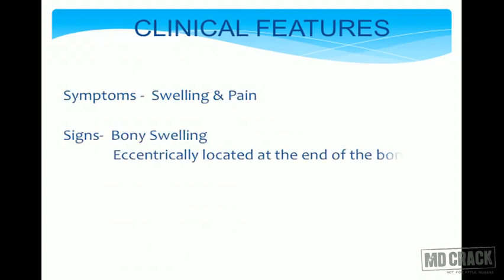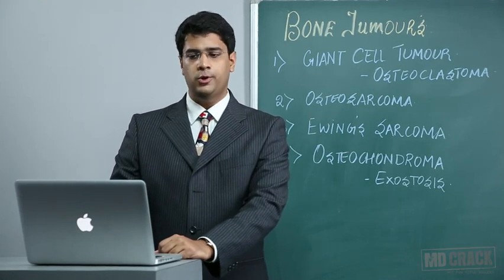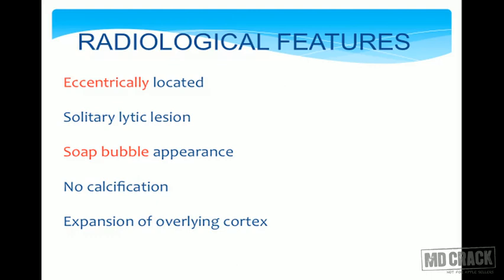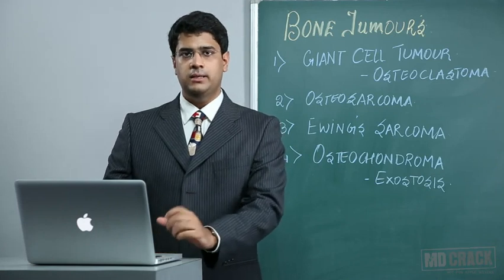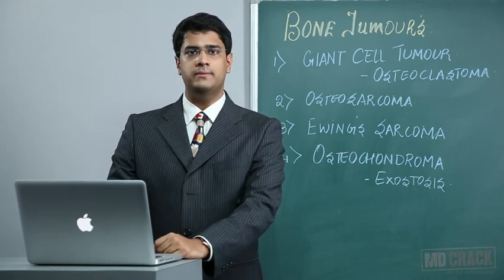Clinical features of osteoclastoma include symptoms of pain and swelling. Signs include a bony swelling that is eccentrically located in the bone — not in the midline — which is a classical feature. It has a smooth surface and is quite tender. Radiological features are very important for MCQs: the lesion is eccentrically located, it is a solitary lytic lesion, and it has the classical soap bubble appearance. There is no calcification and there is expansion of the overlying cortex.